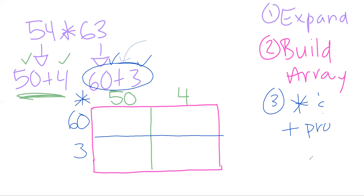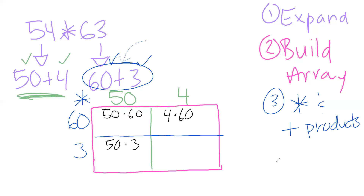Step three: multiply, then add products. We have a column of 50 times a row of 60, a column of 50 times a row of 3, a column of 4 times a row of 60, and a column of 4 times a row of 3.